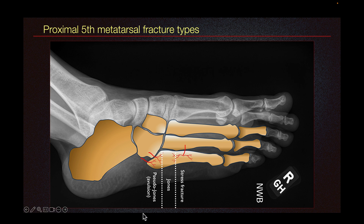The first fracture type is the Pseudo-Jones fracture. It is an avulsion-type fracture due to avulsion from the peroneus brevis tendon. This involves the articular surface of the cuboid with the fifth metatarsal, and this area has good vascular supply, so it heals well.